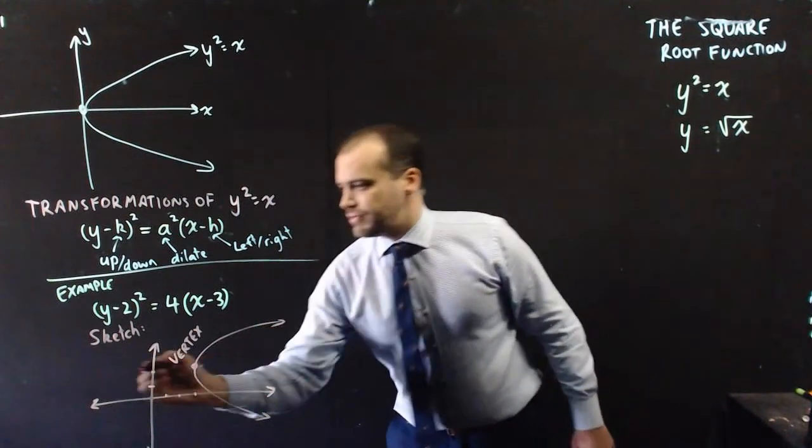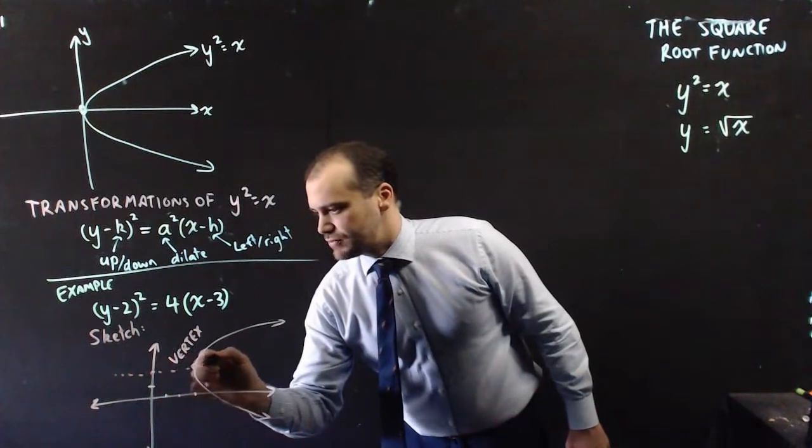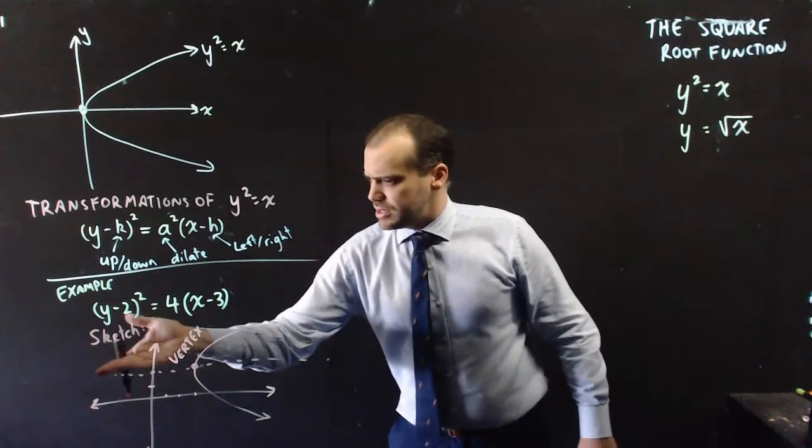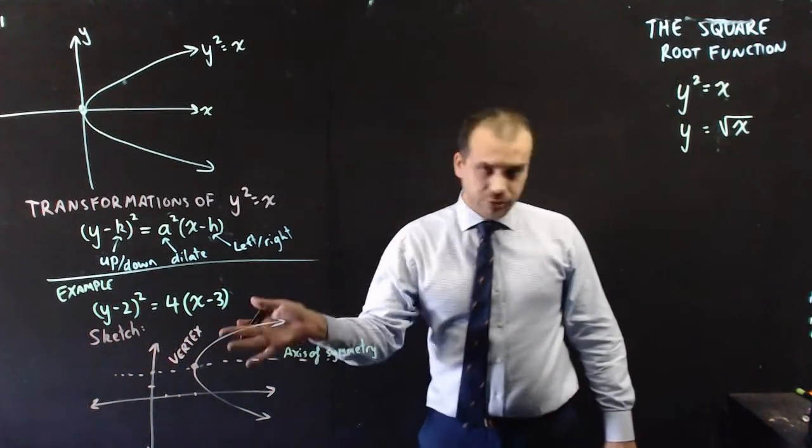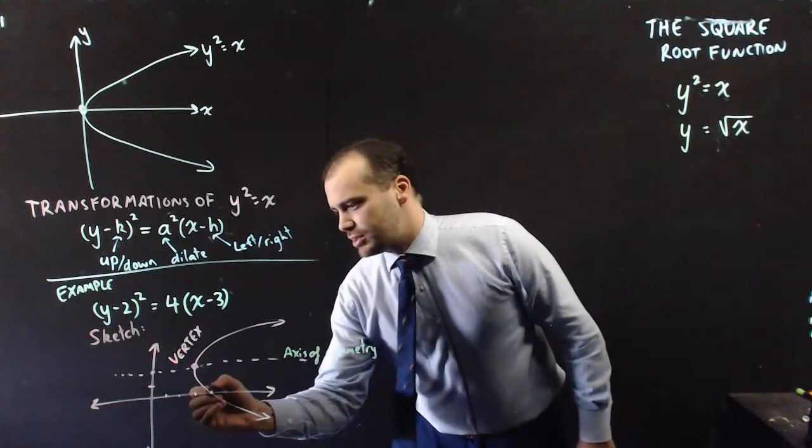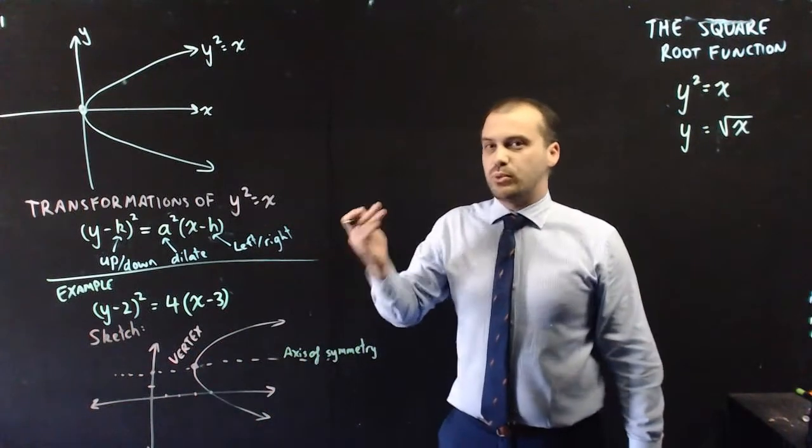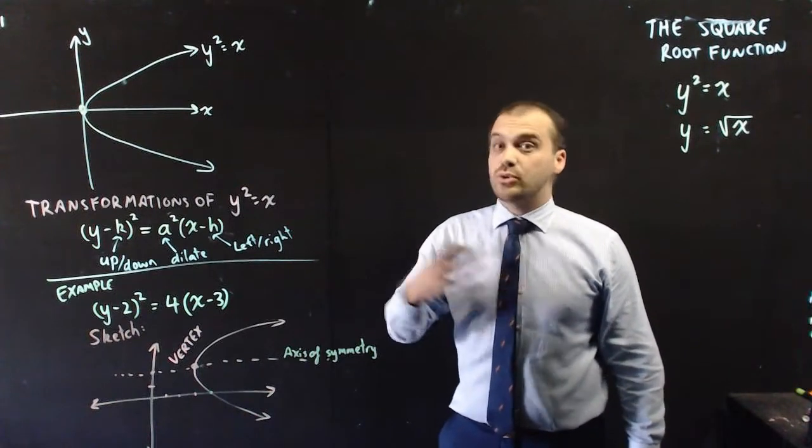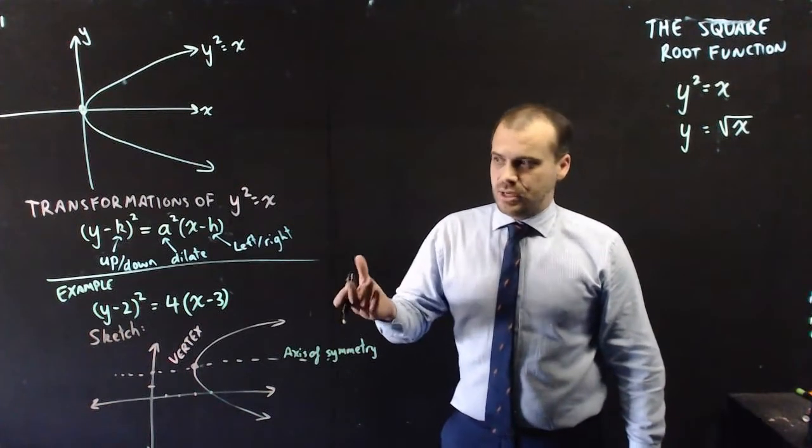Now, the other piece of information we have is just an axis of symmetry, which is just that dotted line. You don't have to draw it in unless you're asked to. This is the axis of symmetry. I really only want you to know the vertex and the axis of symmetry. You can find that x-intercept if you want to, just by letting y equal 0, the same way that you'll always find an x-intercept.